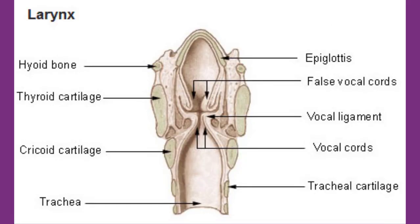The larynx is commonly called the voice box or glottis, and it is the passageway of air between the pharynx above and the trachea below. It extends from the fourth to the sixth vertebral levels. The larynx is often divided into three sections: the sublarynx, larynx, and the supralarynx. It is formed by nine cartilages that are connected to each other by muscles and ligaments. The larynx plays an essential role in human speech. During sound production, the vocal cords close together and vibrate as air expelled from the lungs passes between them.